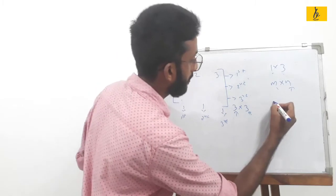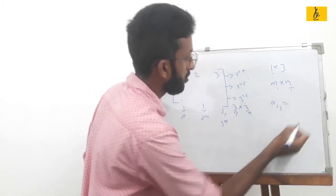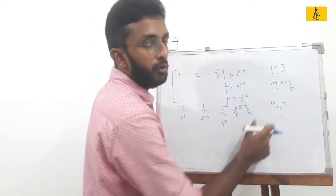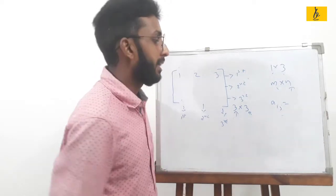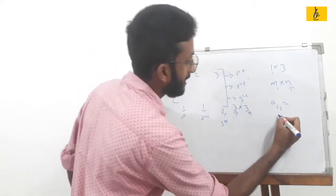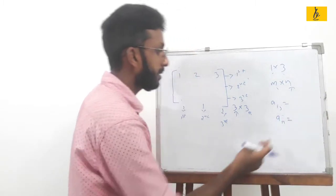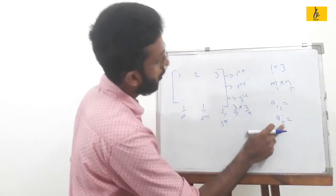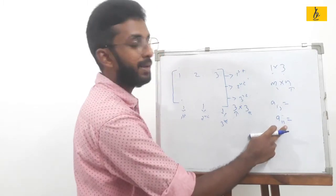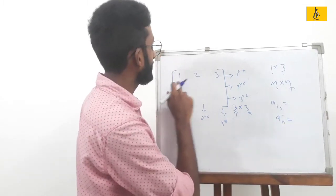Then we call the element notation A_ij form. What is the A_ij form? A common element is called A_ij. For example, A11 refers to the element in the 1st row and 1st column. So I call the element in the 1st row, 1st column as A11.